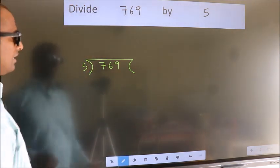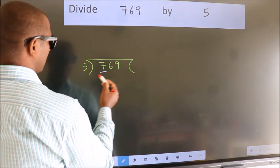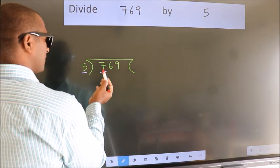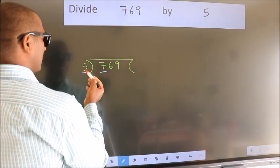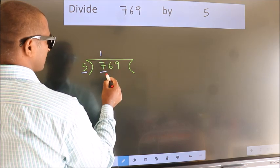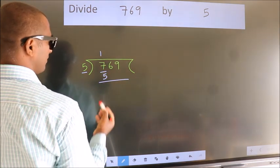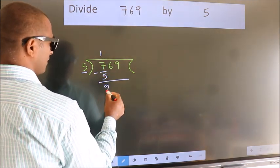Next. Here we have 7, here 5. A number close to 7 in the 5 table is 5 1s 5. Now we should subtract. We get 2.